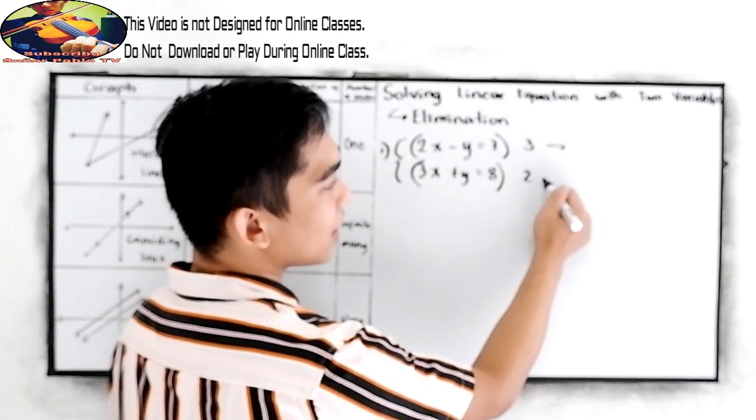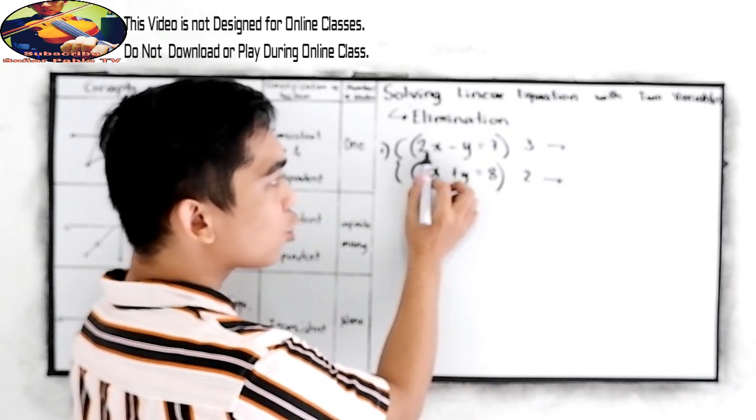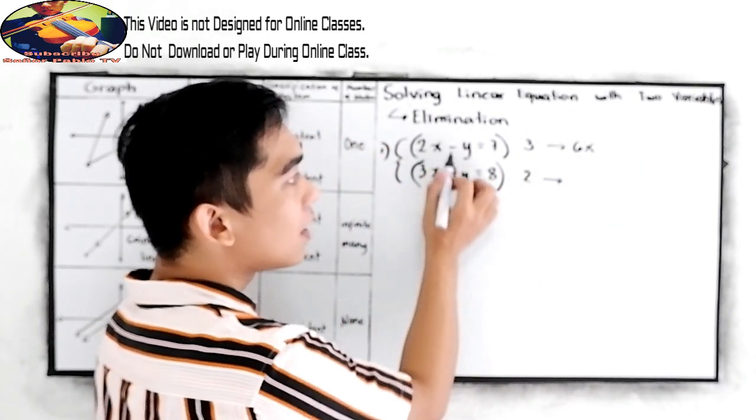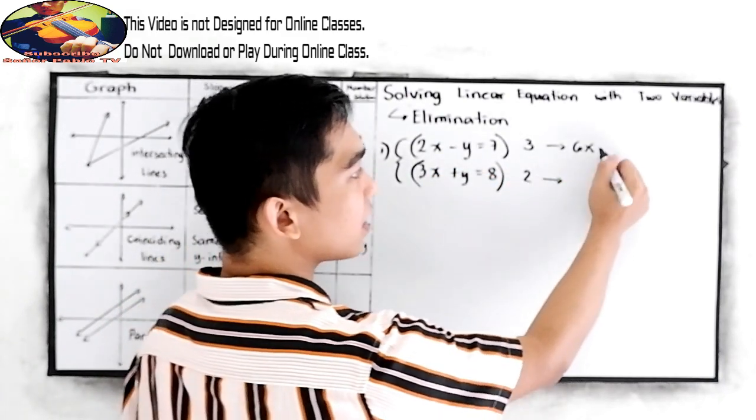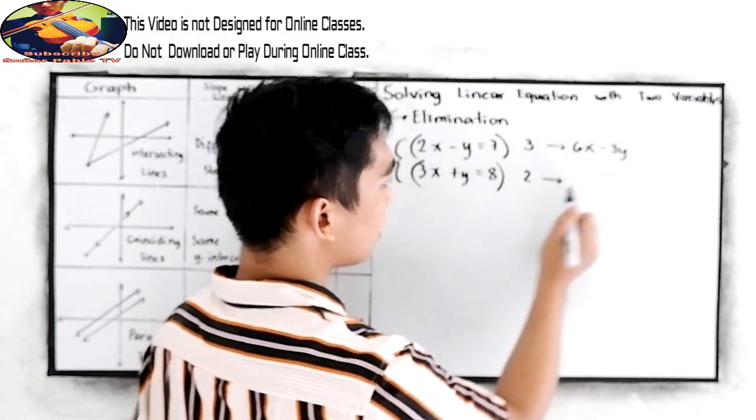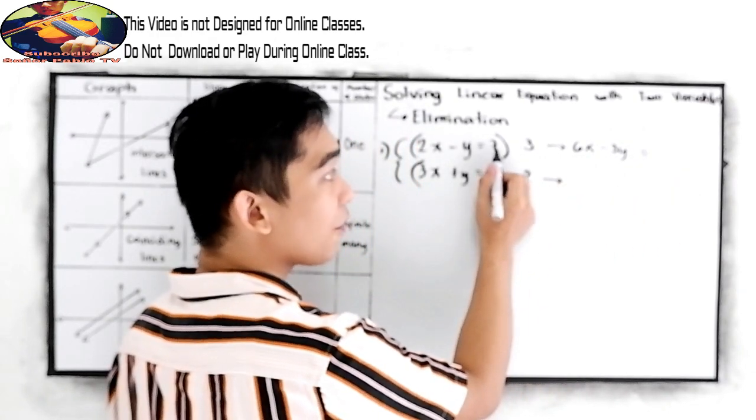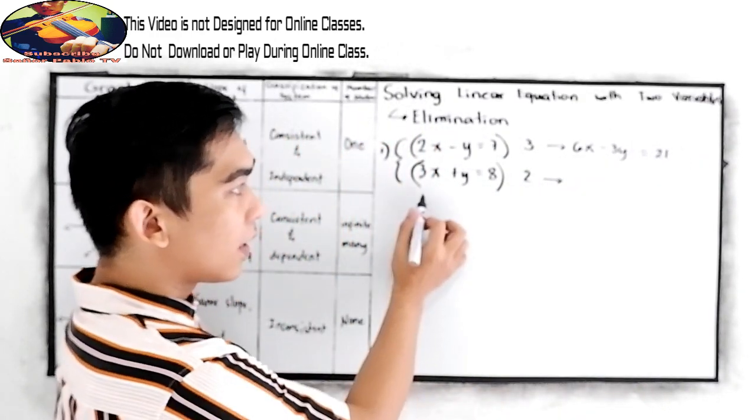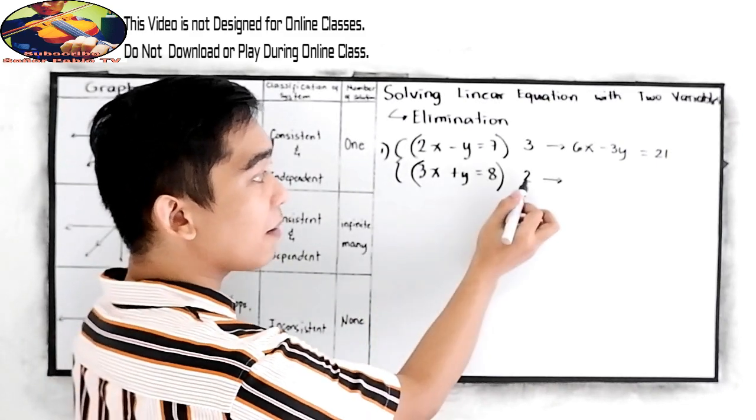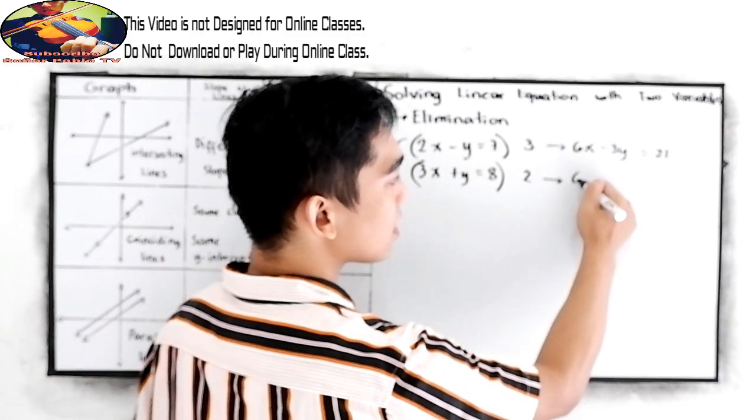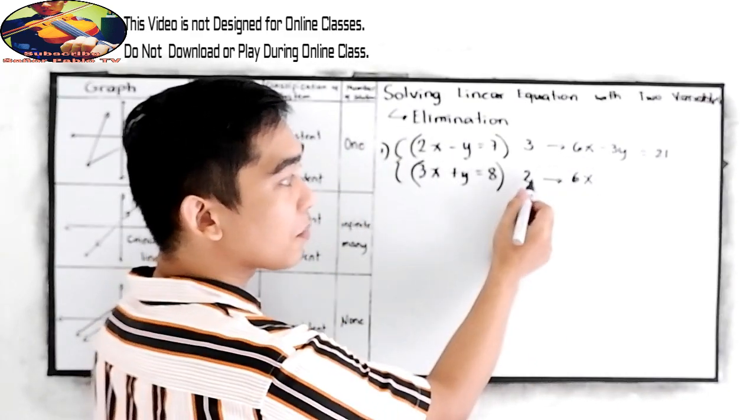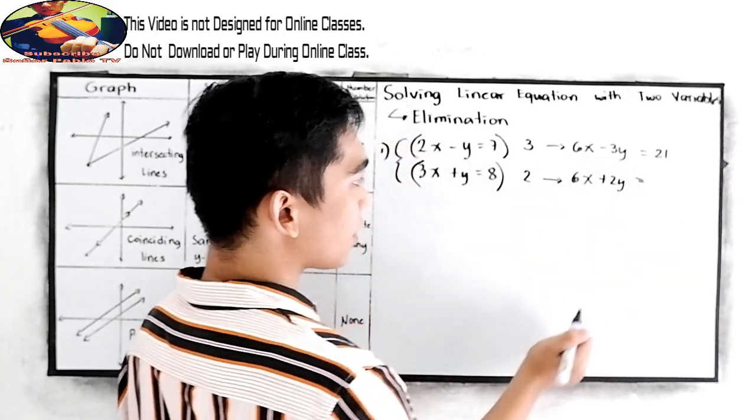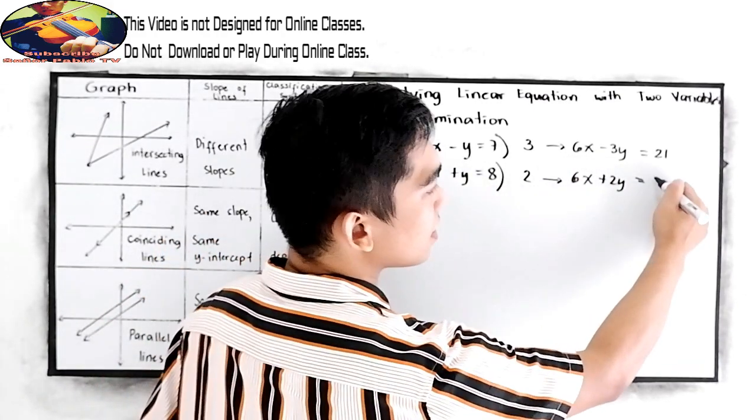So that the equation will be 2x times 3, that is 6x. Negative y times 3, negative 3y, is equal to 7 times 3, 21. Second equation, 3x times 2, that is 6x. Y times 2, that is positive 2y, is equal to 2 times 8, 16.